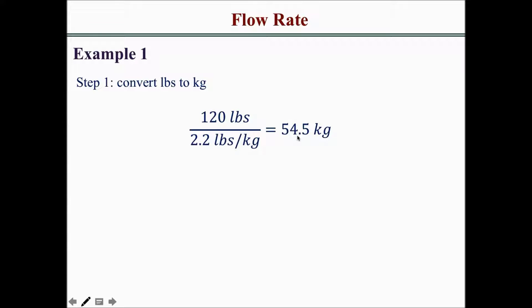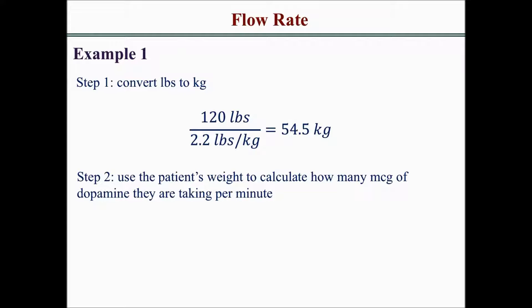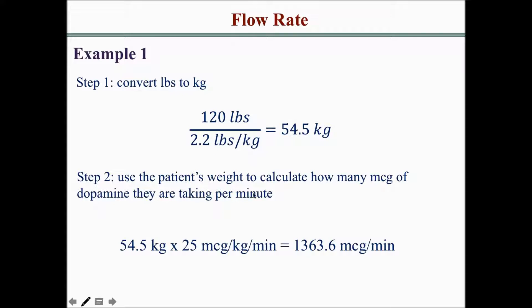Then you take the weight of the patient and multiply it by the dosing, and that will tell you how many micrograms the patient is receiving per minute. So 54.5 kilograms times 25 micrograms per kilogram per minute gives you a dosing of 1,363.6 micrograms per minute.